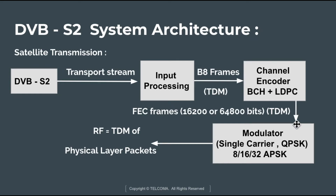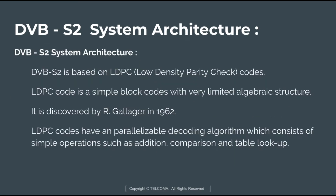After applying these codes, the TDMA frame comes out. This frame consists of either 16,200 bits or 64,800 bits. The TDM frames then go to the modulator, which consists of single-carrier QPSK, 8PSK, 16APSK, or 32APSK modulation. After selecting the modulation scheme, a physical layer packet signal comes out through the modulator. This is the DVB-S2 system architecture.